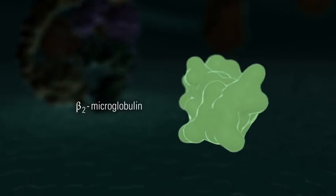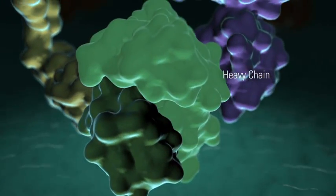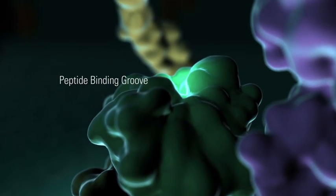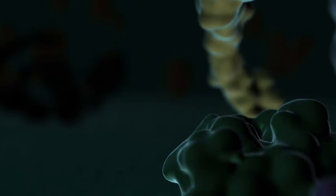Subsequent binding of the beta-2 microglobulin subunit causes a major conformational change in the heavy chain that creates a peptide binding groove and is critical for the entry of class 1 molecules into the peptide loading complex, or PLC.